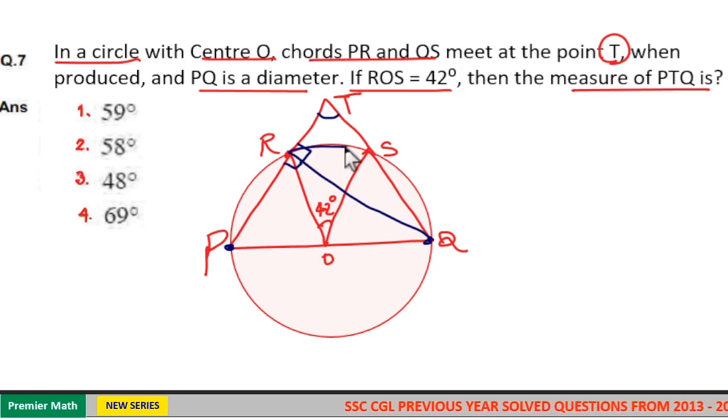And here this is arc ROS. ROS creates 42 degrees at the center. Then the same arc ROS can create 42 by 2, that is 21 degrees, at any point of the circumference of the circle. This is 21 degrees, that is 42 by 2.